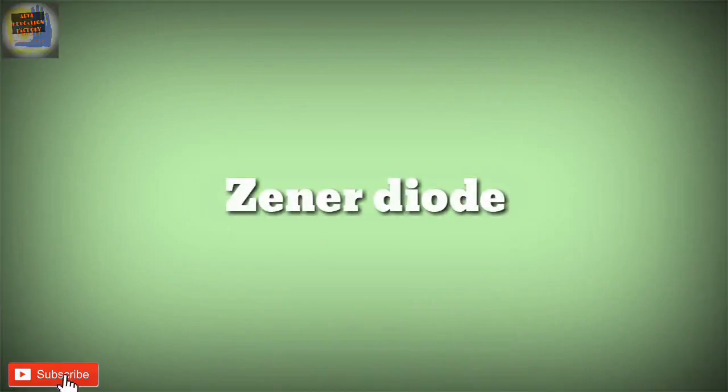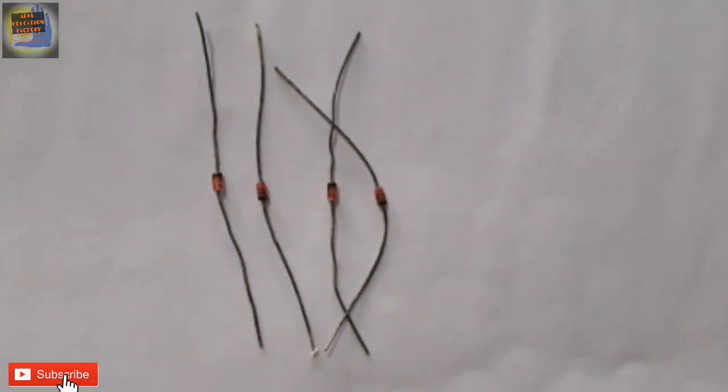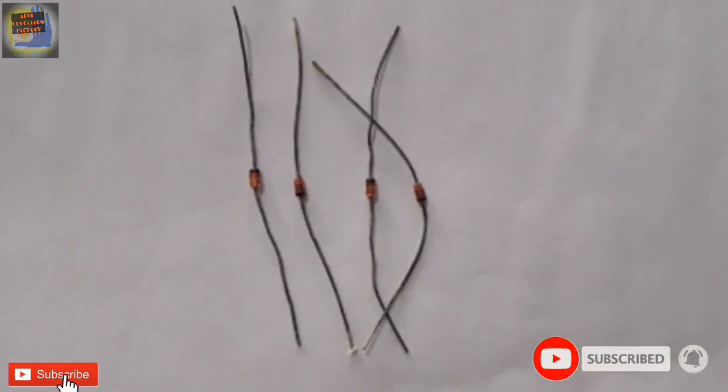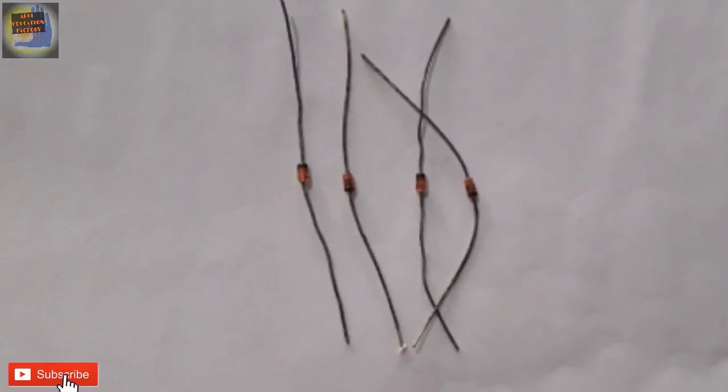Xenor Diode. Xenor Diode is fabricated by heavily doping both P and N sides of the junction. It is designed to operate under a reverse bias in the breakdown region and used as a voltage regulator.